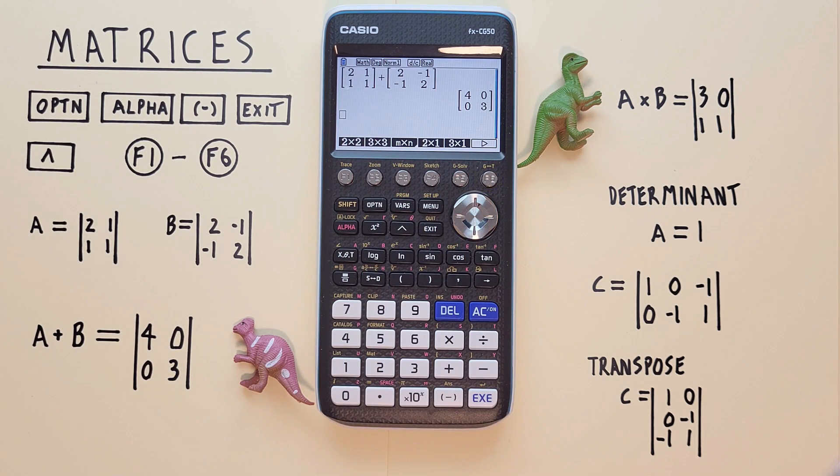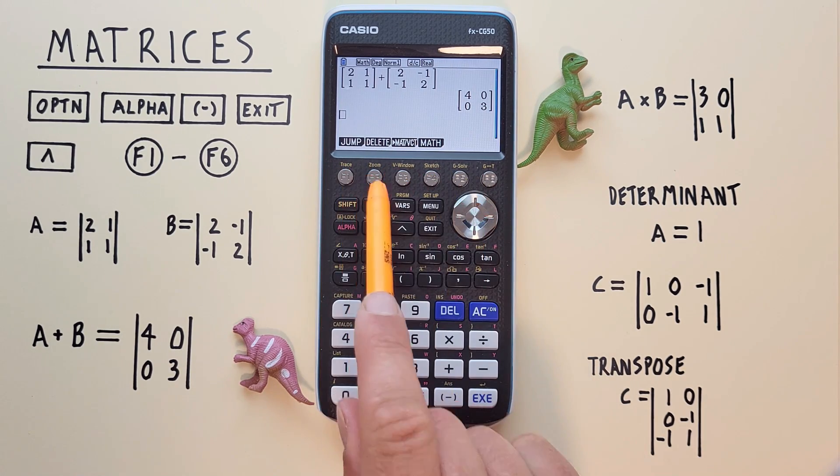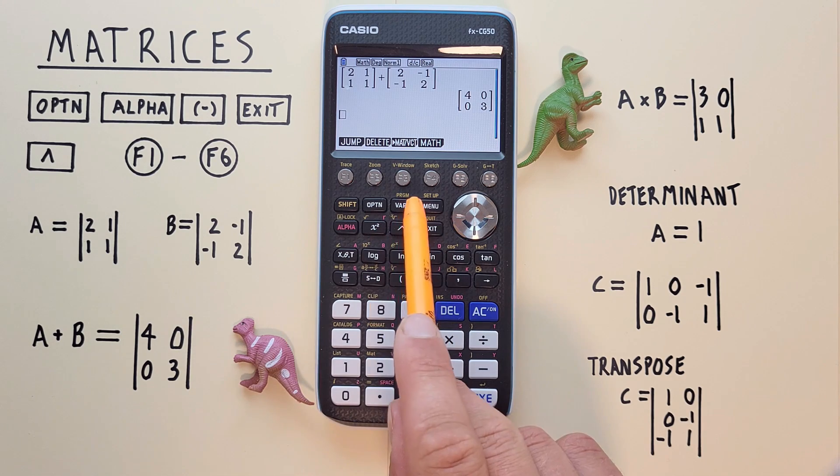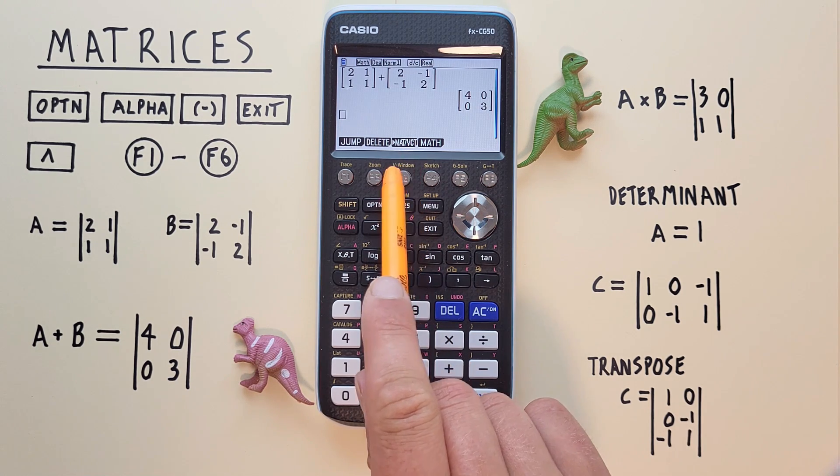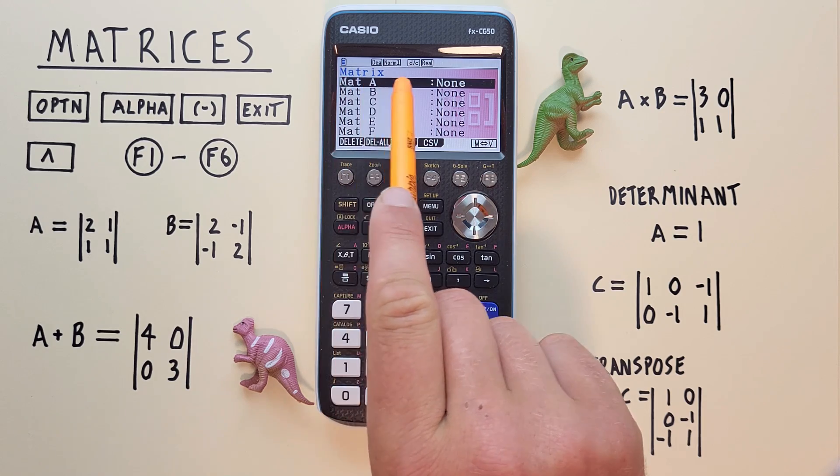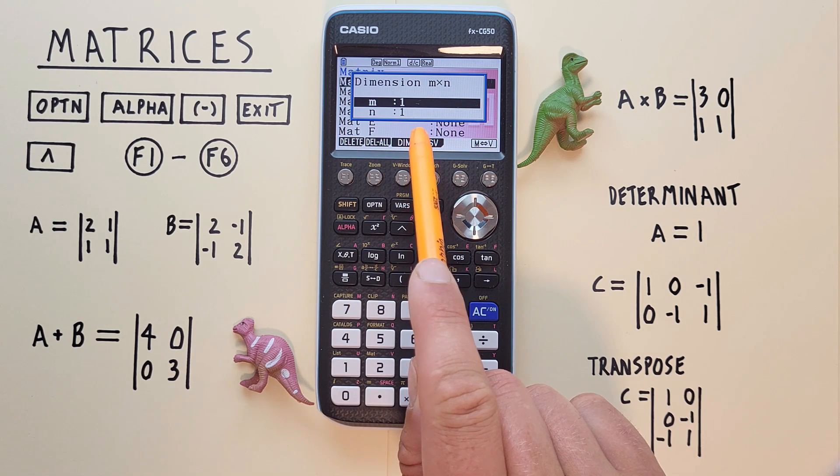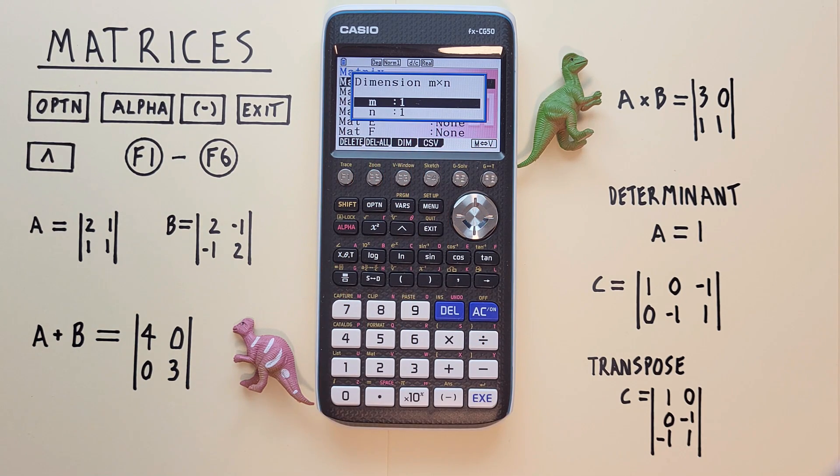But what if we want to enter and save our matrix for multiple calculations? To do this we go back to our original menu at the bottom with the exit key and then hit F3 for matrix vector. That brings up our matrix screen where we can enter matrices that will be saved.